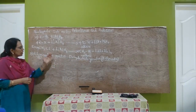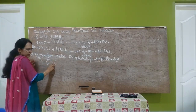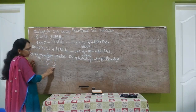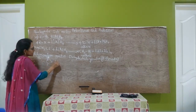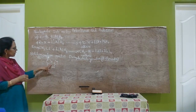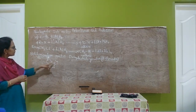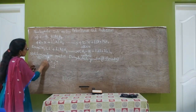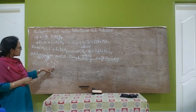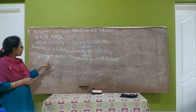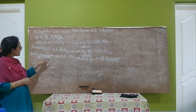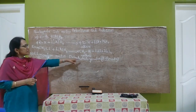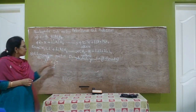The carbon adjacent to the halogen is called the alpha carbon. The carbon adjacent to the alpha carbon is the beta carbon. In dehydrohalogenation, the halogen is removed from the alpha carbon and the hydrogen is removed from the beta carbon. The base accepts the proton from the beta carbon. Therefore, this reaction is also called beta elimination.